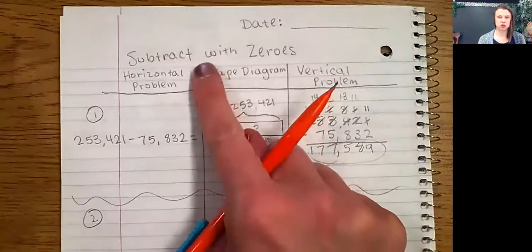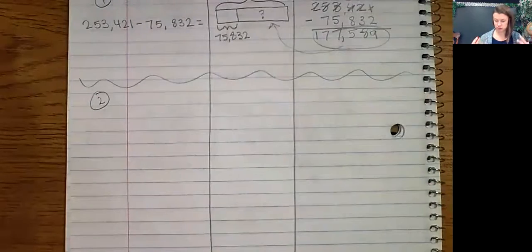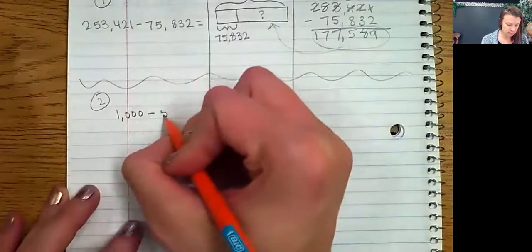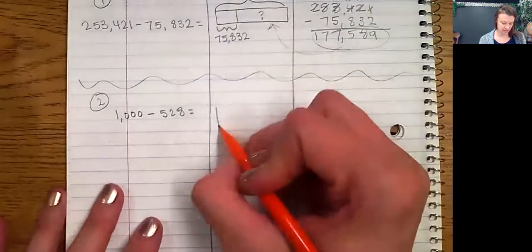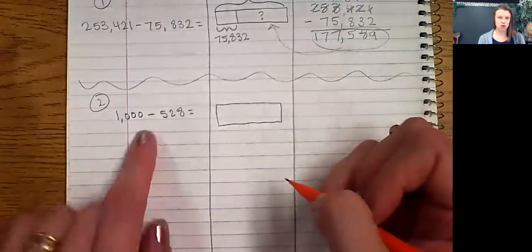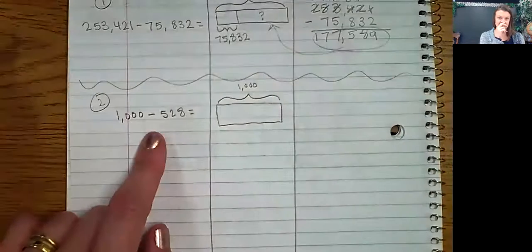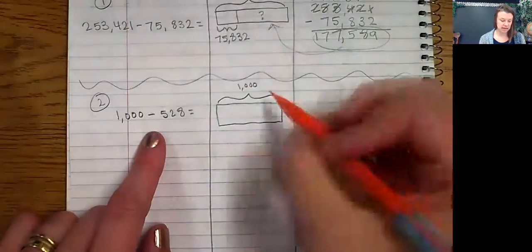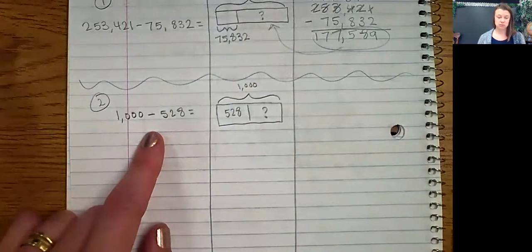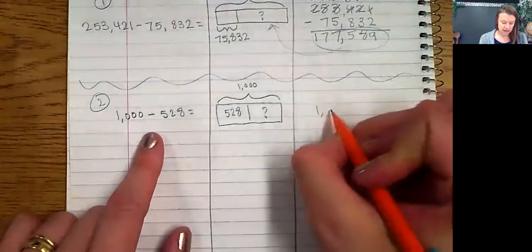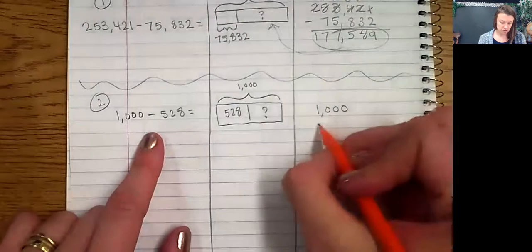Now's where we really start to look at our goal: subtracting with zeros. Number one was kind of the warmup to get us thinking in the subtraction direction, and now we're taking a look at a problem with zeros. Here we have 1,000 minus 528. I'll draw a tape diagram — 1,000 is the total, the bigger number. It has two pieces: one is 528 and the other is the question mark, the number we're trying to figure out. Go ahead and line those up vertically.